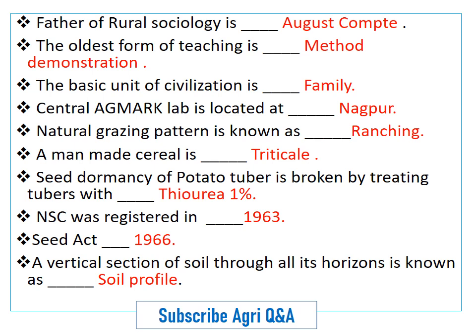The Central Agmark Lab is located at Nagpur. Natural grazing pattern is known as ranching. A man-made cereal is called triticale.